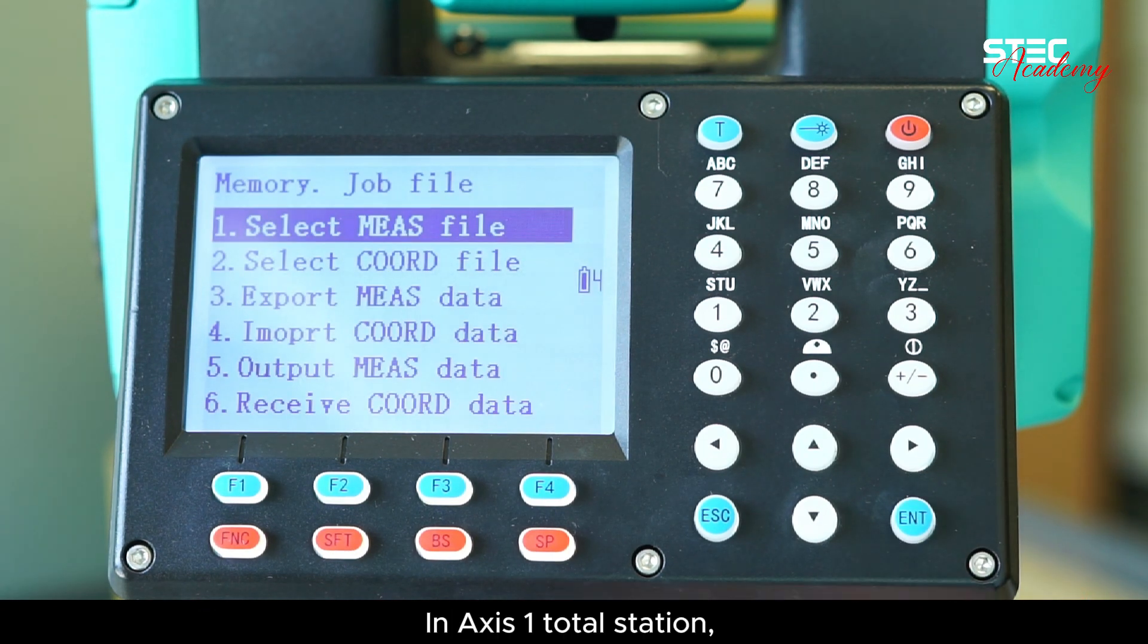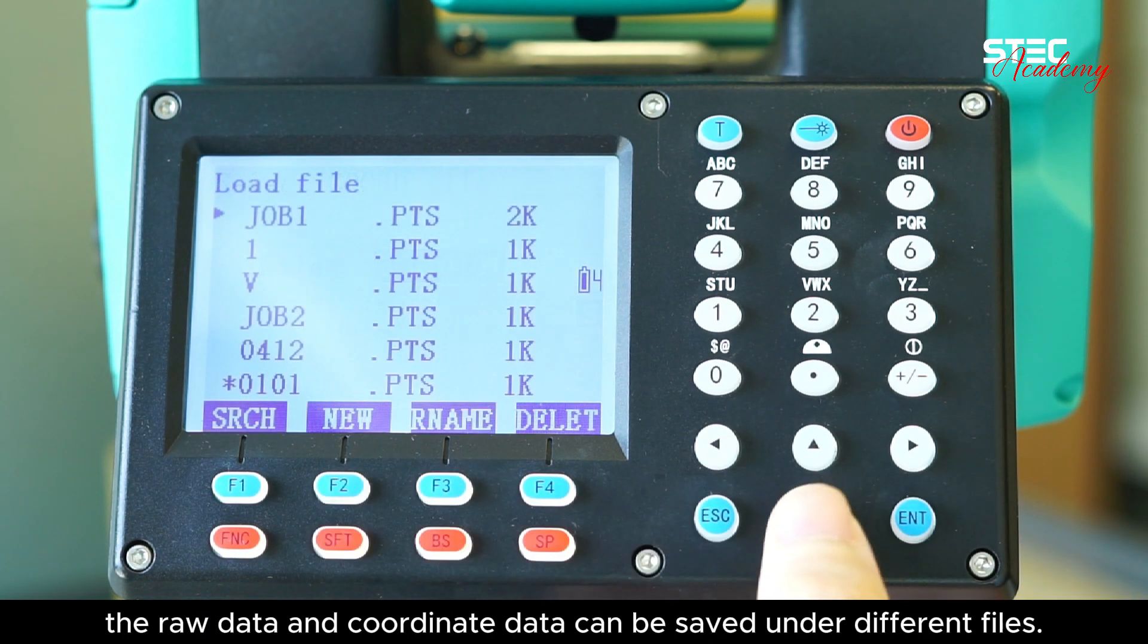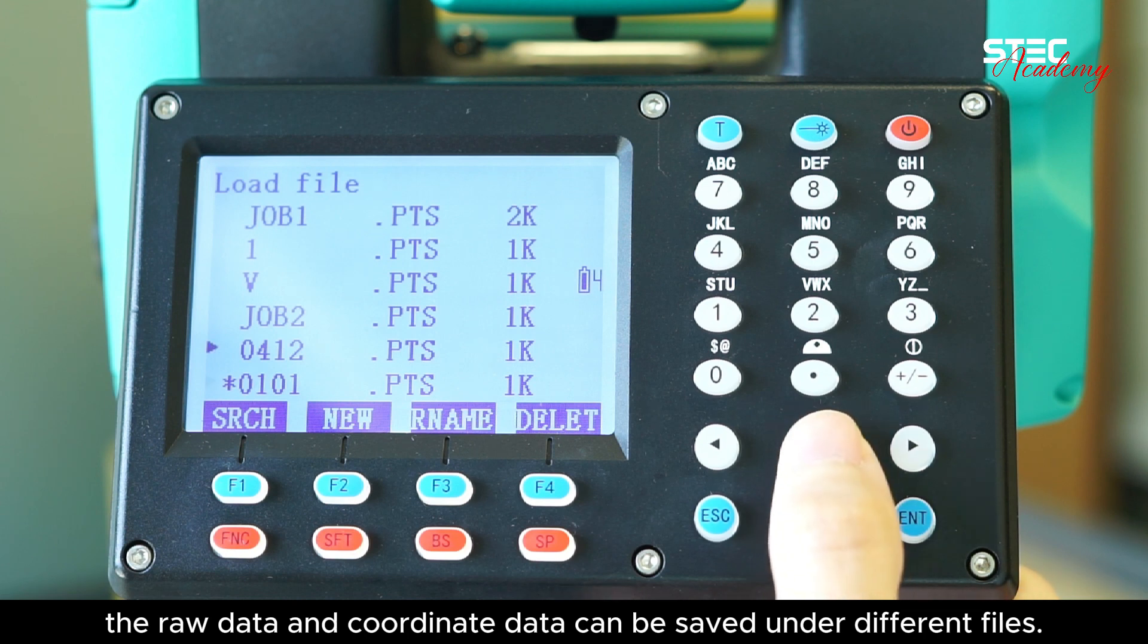In AXIS 1 total station, the raw data and coordinate data can be saved under different files.